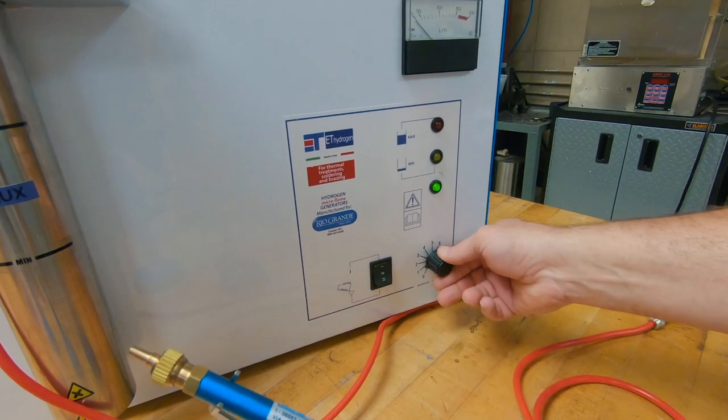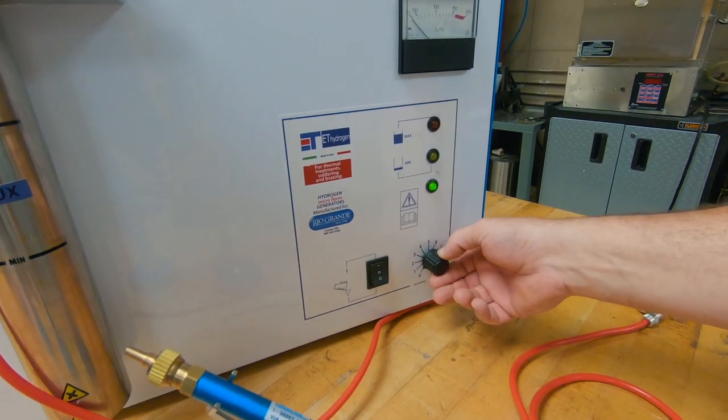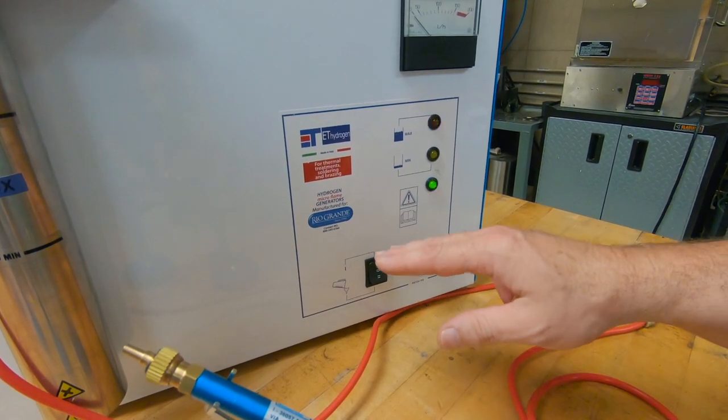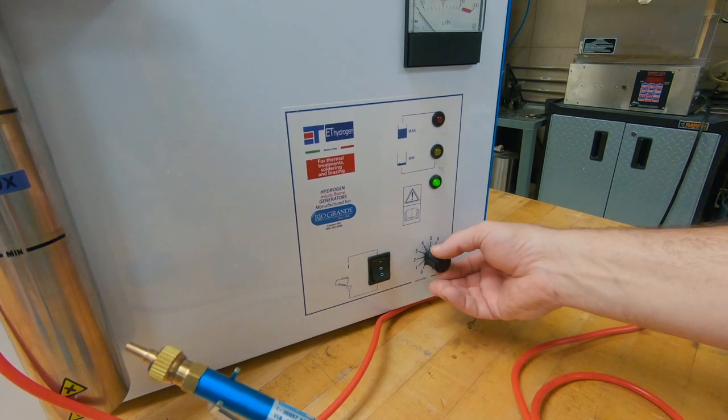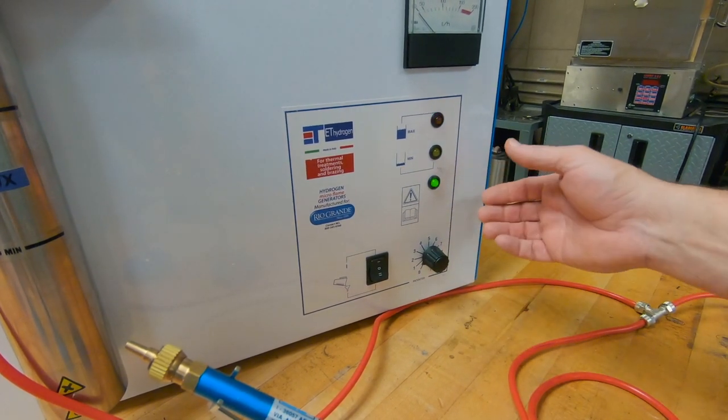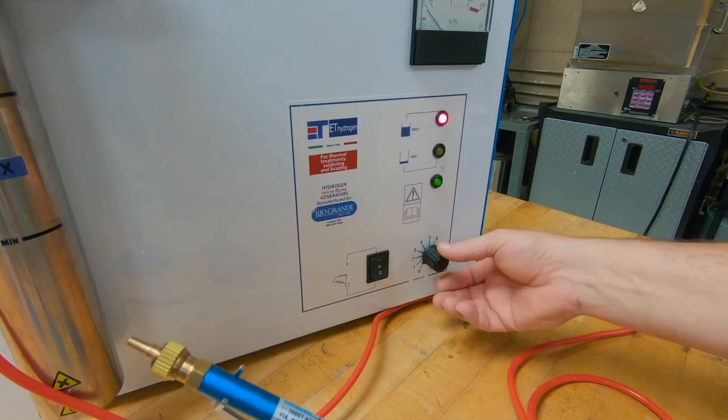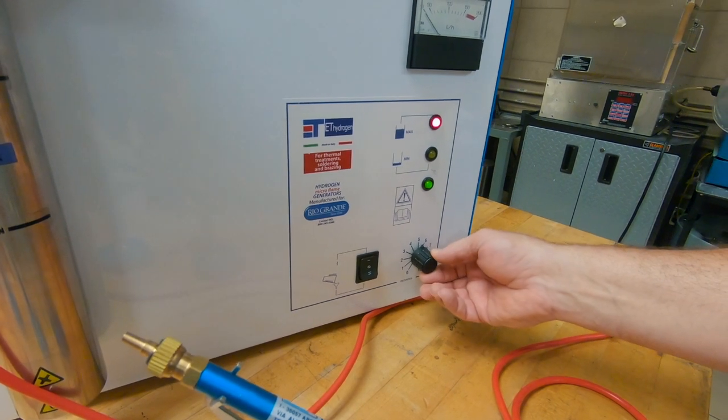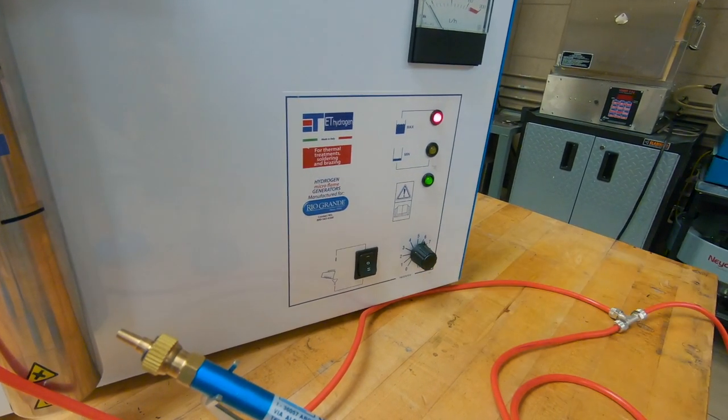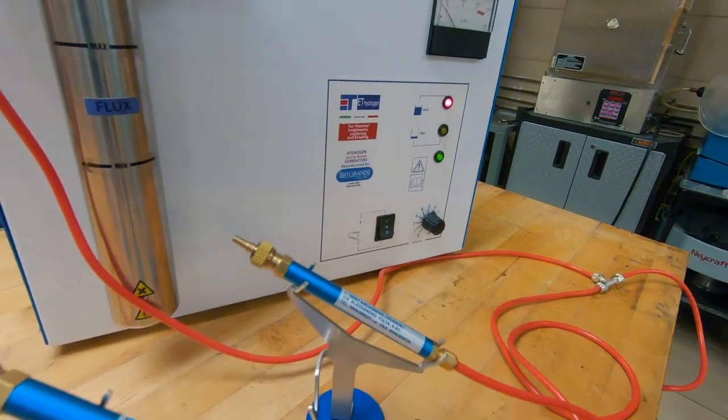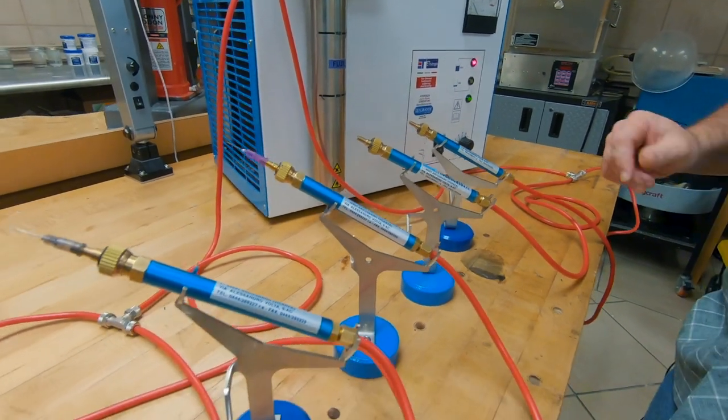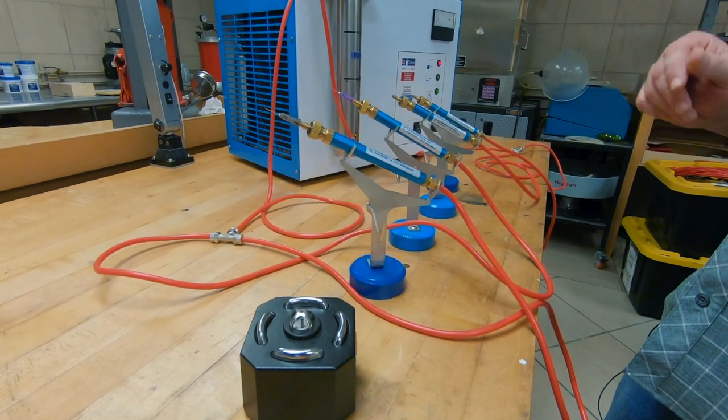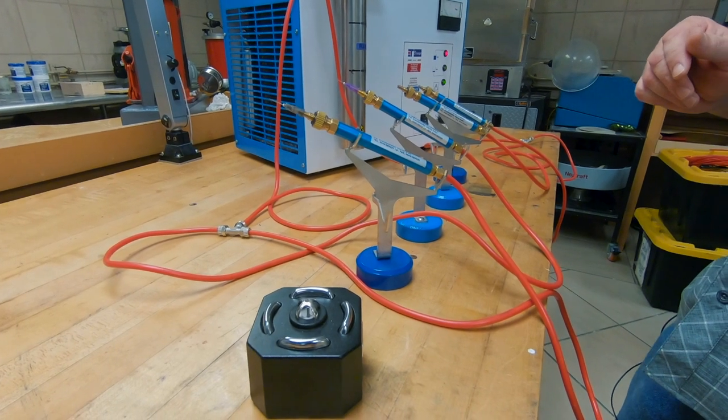Whenever you start it up, always remember to have the power control down at zero. You want it to run for about five minutes before it's going to actually start to generate a really good flow. So whenever you first start it up, make sure it's at zero. Then you can turn it up to five or six just so that there isn't a restriction. So we're going to let the machine run for just a few minutes and then we will start the torch up.